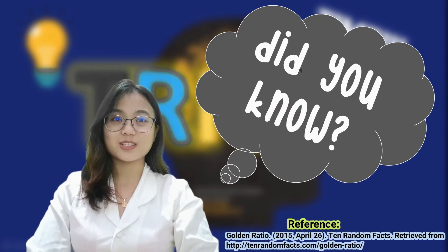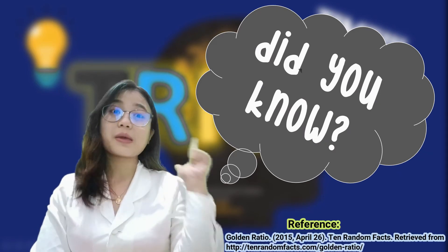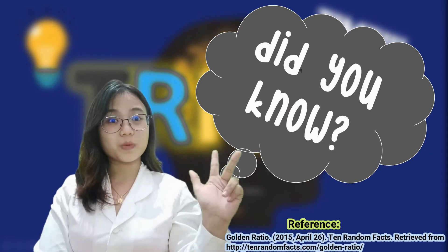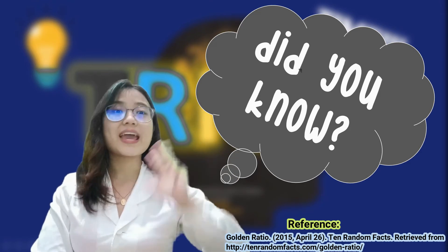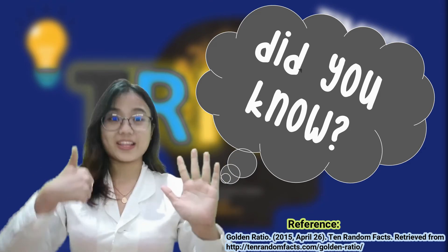Did you know? The Golden Ratio is also known as the golden section, medial section, golden proportion, divine section, extreme and mean ratio, golden mean, and in Latin it is also known as sectio aurea.